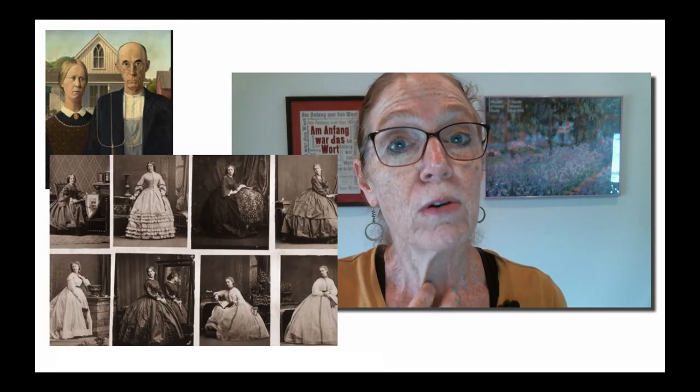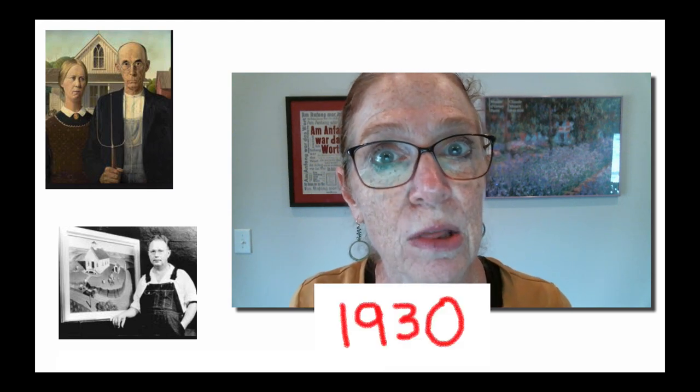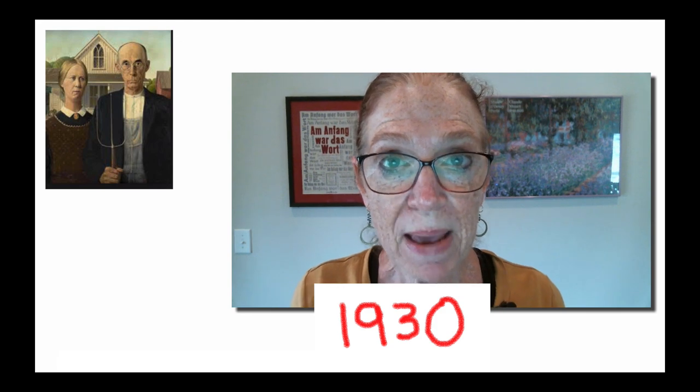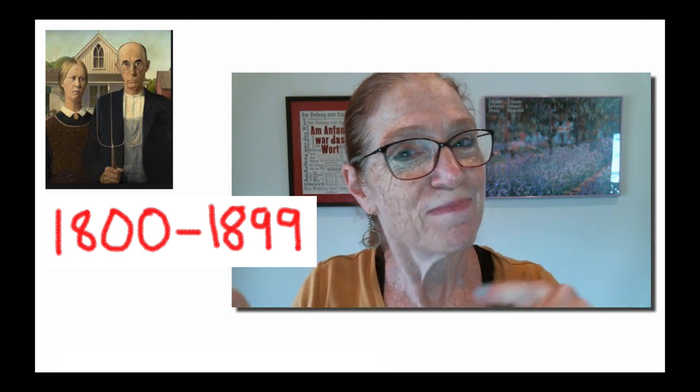Her apron is brown and her dress looks black — black to match the farmer's jacket. She has a piece of jewelry called a brooch; it's old-fashioned. Women back in the 19th century wore brooches. This painting was made in 1930, but the people are dressed to look like a farmer and a woman from the 1800s, the 19th century. So that's different.